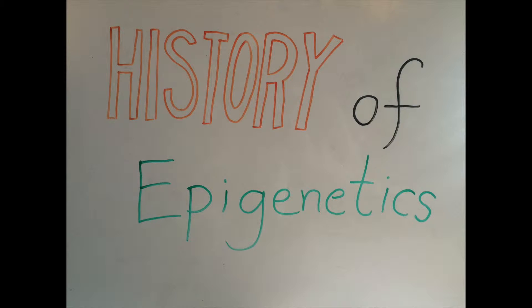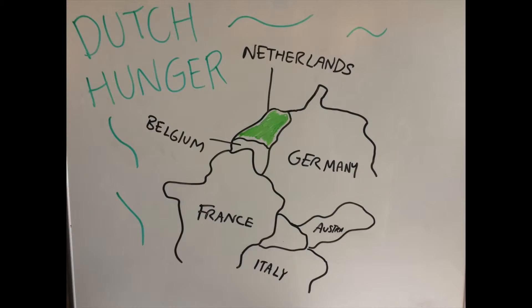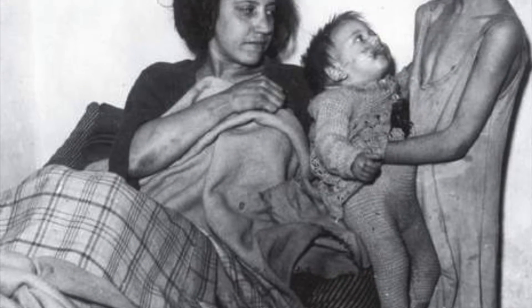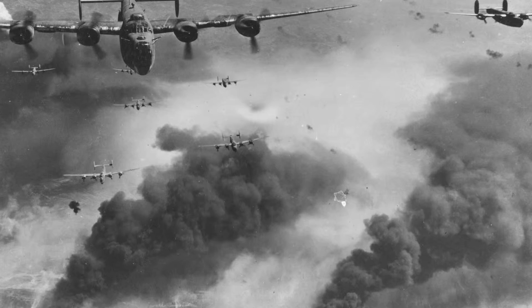One important example where scientists saw epigenetics in action was the Dutch Hunger Winter, which took place in the Netherlands. The Dutch Hunger Winter was a period of famine from 1944 to 1945 as a result of World War II.